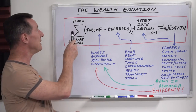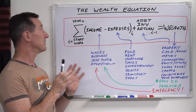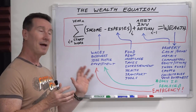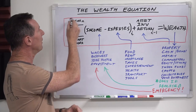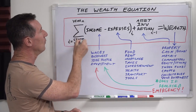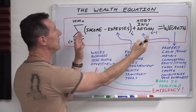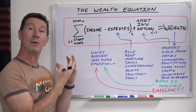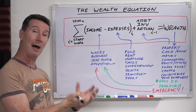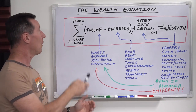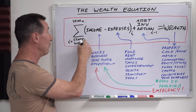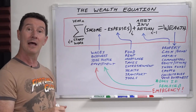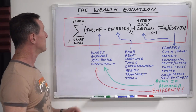This is the summation, or sigma, symbol in mathematics. Basically, what it's saying is that we run through a loop here, and we do all this stuff and add them up over time — we're summing them up over time. Think of it like a for loop. The for loop starts down here and ends up here; these are the boundaries.